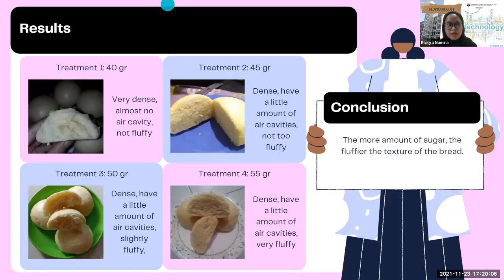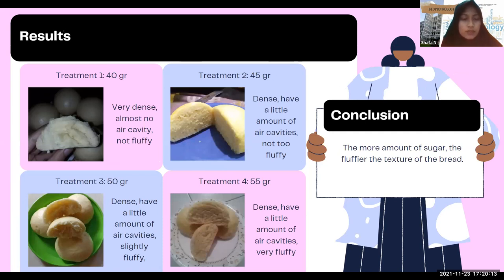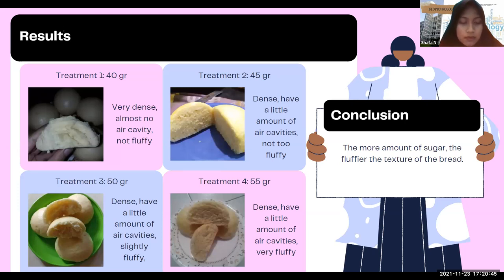For the results, we did four treatments. The first treatment used 40 grams of sugar — the bread is very dense, with almost no air cavities and not fluffy. The second treatment used 45 grams of sugar — the bread is dense, with a little amount of air cavities and not too fluffy. The third treatment used 50 grams of sugar — the bread is dense, with a little amount of air cavities and slightly fluffy. The fourth treatment used 55 grams of sugar — the bread is dense, with a little amount of air cavities and very fluffy.